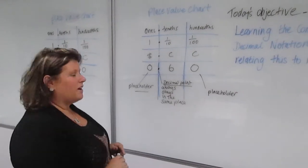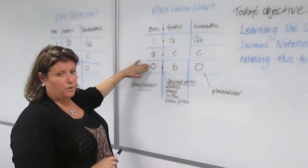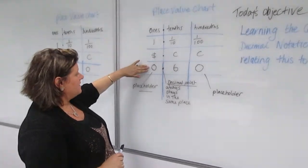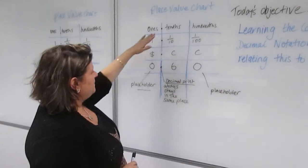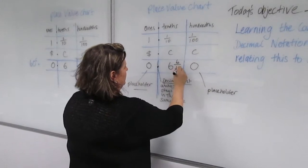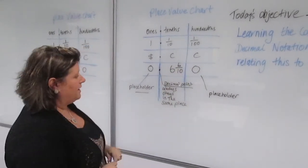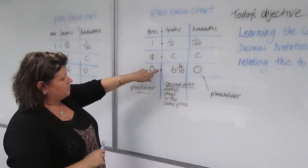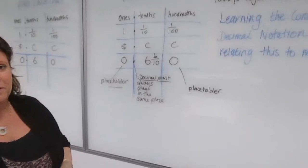That's right because there's zero ones because it's actually less than one, or less than a dollar in this case. So we put a zero in there and that becomes a placeholder. Then in the tenths we have 6 which is 6 out of 10 which becomes 60 cents because there's 0 hundredths. Now you'll notice the decimal point always stays the same and we'll talk about that in the next one when we talk about a dollar.